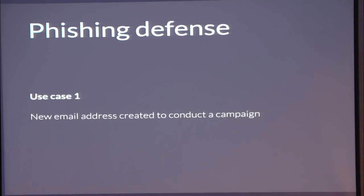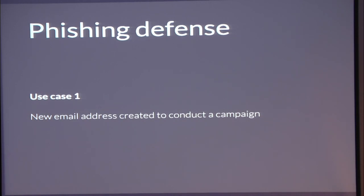We're going to focus specifically on the phishing defense application of email reputation. The large majority of the talk is focused on phishing defense, and we'll break this down into two particular use cases. The first is an email address created to conduct a new campaign — you might create a target-specific address to impersonate someone at the company, or just create a new address with no connection to prior campaigns. We do this all the time as red teamers. This is the use case email rep is really good at — there's no history behind the email address.